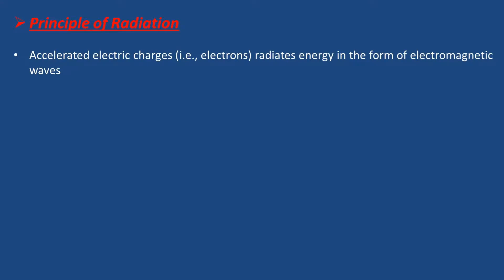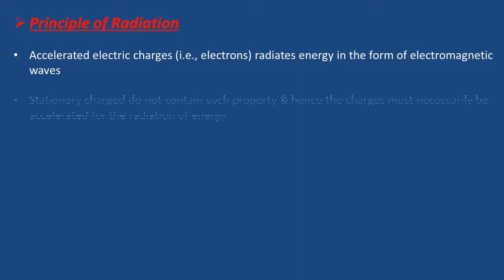Accelerated electric charges — electrons, negative charges — radiate energy in the form of electromagnetic waves. The principle is to produce radiation. The charges must be accelerated for the radiation of energy. If the charges move and accelerate, they will radiate in the form of electromagnetic waves.